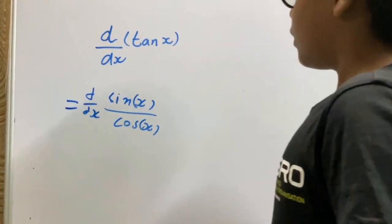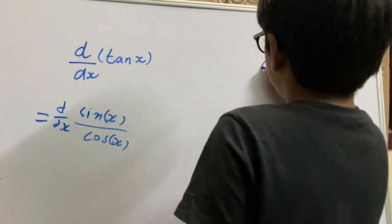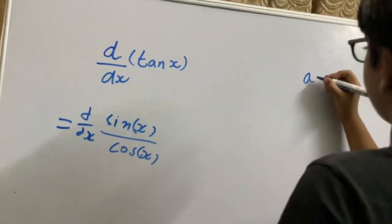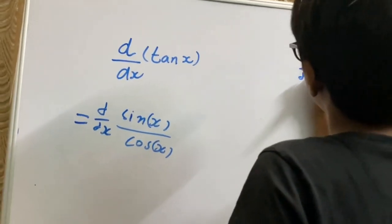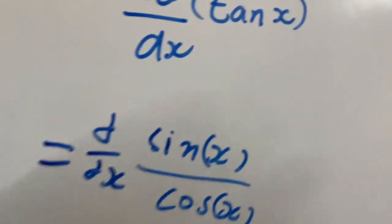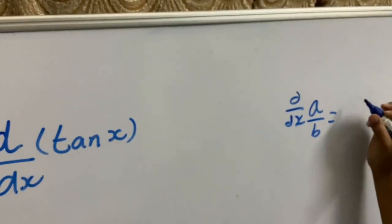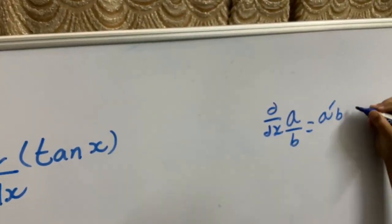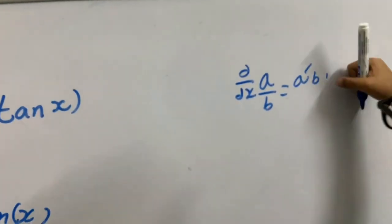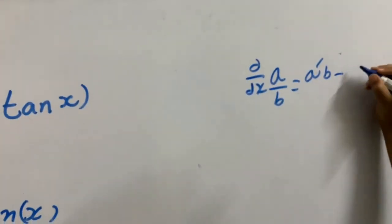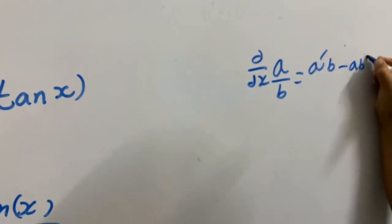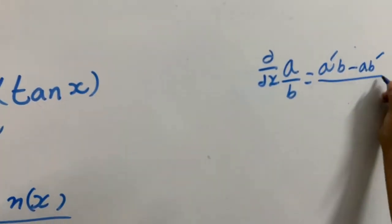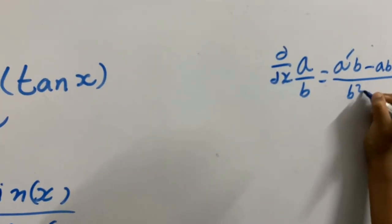With the quotient rule, the derivative of a by b equals the derivative of a times b minus a times the derivative of b, divided by b squared.